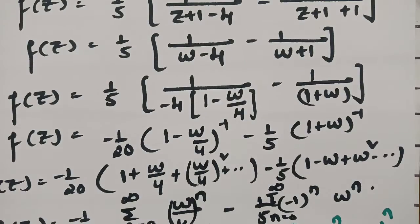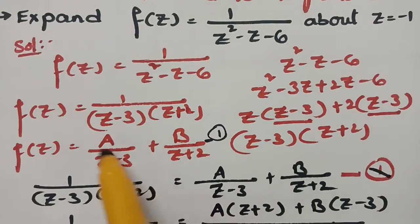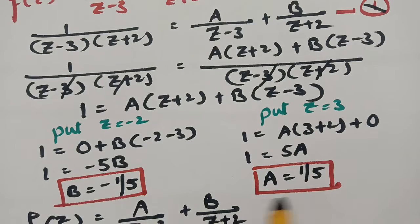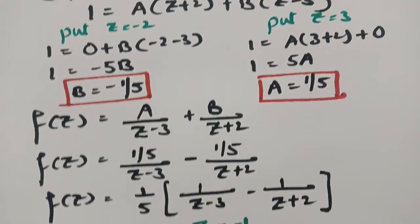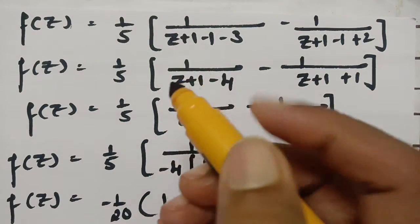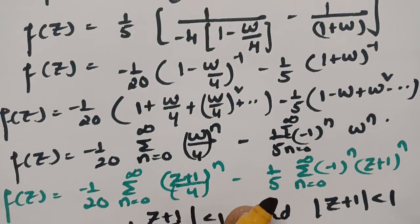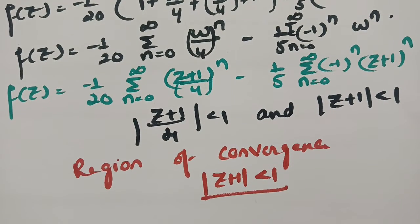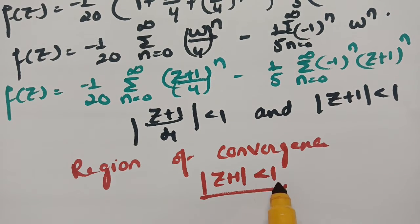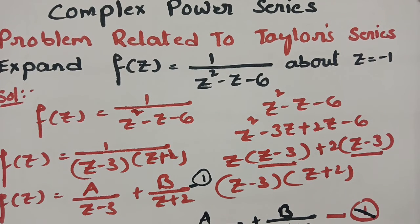So this is the region of convergence. To summarize: we expanded f(z) using Taylor series by first factoring the denominator, then resolving into partial fractions giving A = 1/5 and B = -1/5, then substituting w = z + 1 and expanding to get the series. The region of convergence is |z + 1| < 1. Thank you for watching — this is an important question, so practice and share it with your friends.